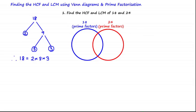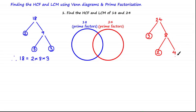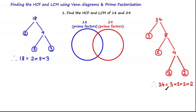Using the factor tree method to find the prime factors of 24, we start with 24 and split it into a product of 3 and 8. As 8 is a composite number — not prime — we can further split 8 into 2 and 4. As 4 is not prime, we split 4 into 2 and 2. Since the ends of all our branches are now circled, the process is complete. So 24 can be written as 3 times 2 times 2 times 2.